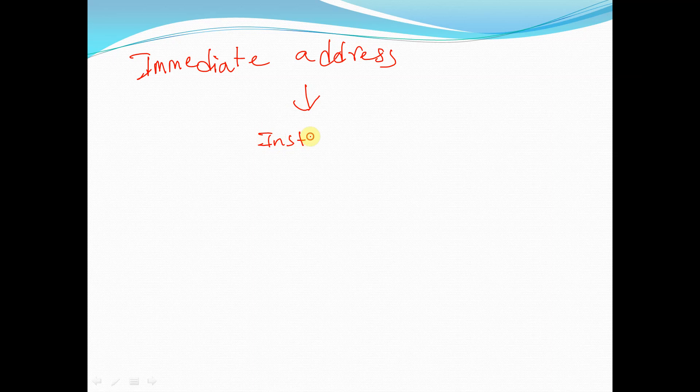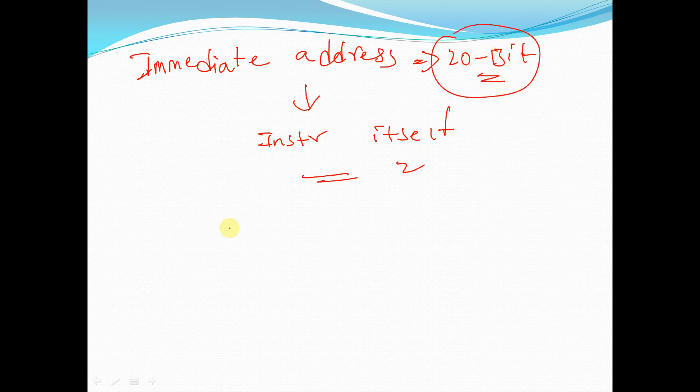In jump instructions, the address for the program counter to jump to is provided in the instruction itself as an immediate value. This immediate address is 20 bits wide. In contrast, for regular immediate instructions, that address is just 12 bits, whereas for jump instructions the address is 20 bits.